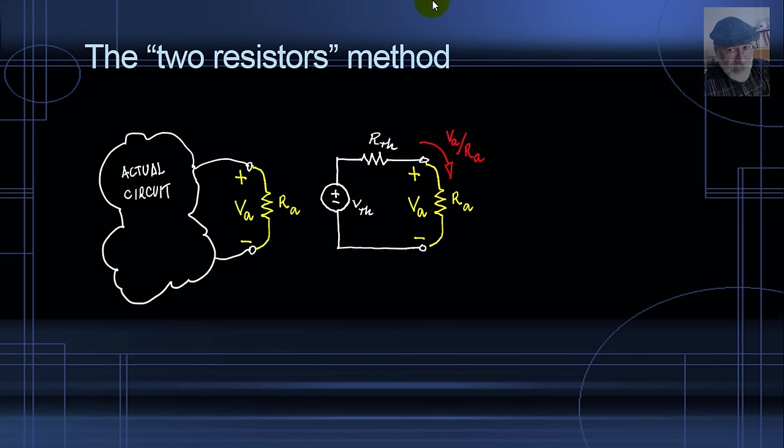That current will produce a voltage drop in the resistor R_TH, and that will be given by Ohm's law, R_TH multiplied by the current V_A divided by R_A. Now we can write a KVL equation around that loop, going up by V_TH, going down by the drop in the resistor R_TH, and going down by V_A.